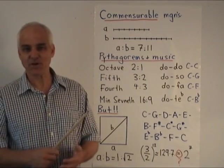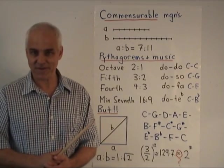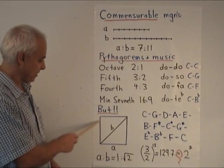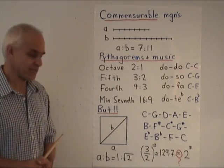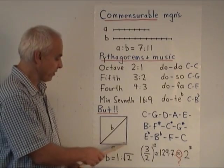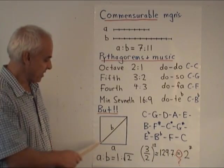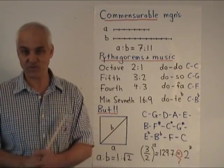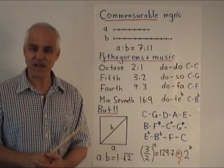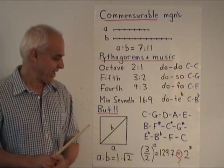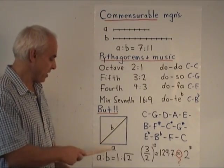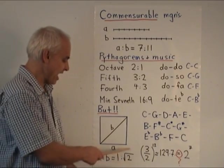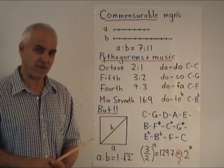However, there was a major difficulty with this idea of proportions as being the basis for everything. And that was illustrated by the famous discovery that if you take a square, and you take the diagonal of a square, then the side and the diagonal are not commensurable. That's a famous conundrum in mathematics, and it leads to the theory of irrational numbers. We now would say that A to B is in the proportion one to root two. But the ancient Greeks didn't have a theory of things like root two.